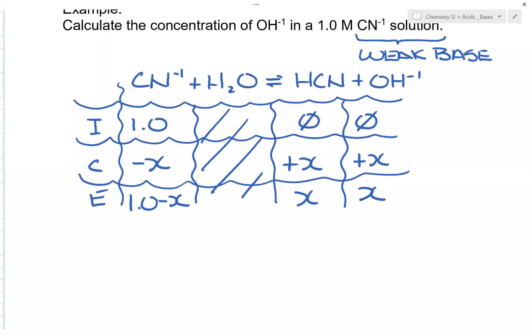Now, when you set this up, because this is a base, what you have is you have Kb is equal to concentration of HCN, concentration of OH⁻¹, all over concentration of CN⁻¹.